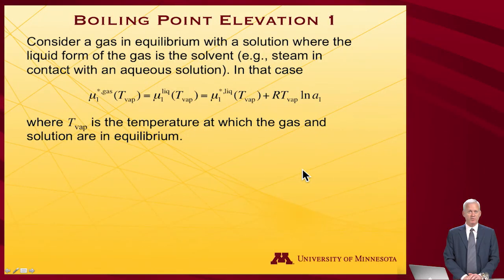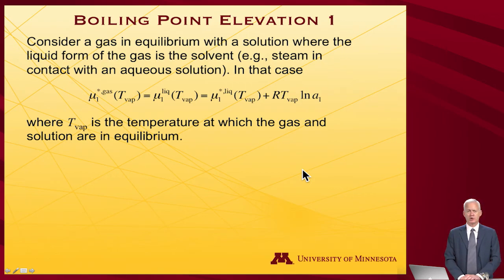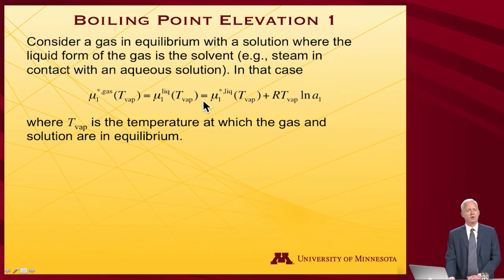Now let's take a look at two more colligative properties. I'm going to start with boiling point elevation. That sounds a little bit similar to what we looked at last time — freezing point depression — but it's for a different phase change. Now it's for a liquid becoming a vapor, and so all the arguments are going to be essentially the same; we're just changing the name of the phase.